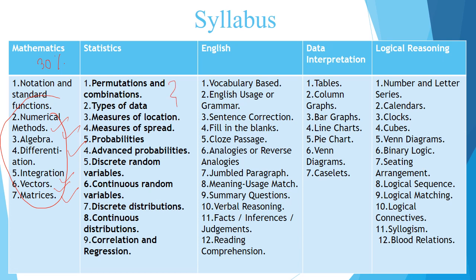Statistics: a few chapters will be covered in your Plus 2 syllabus, but the major part is new. I recommend you to focus here more because it will form the base of your further actuarial papers. Topics like discrete random variables, continuous random variables, discrete and continuous distributions, and correlation and regression will also be covered in the CS1 syllabus. By practice, gaining full 30% in this subject is not that difficult.